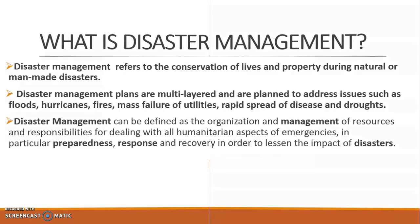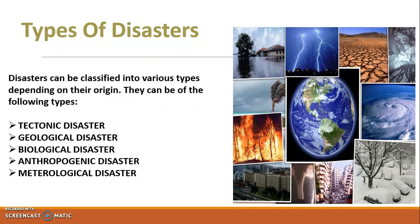Next we are going to see some of the types of disasters. Disasters are basically classified into types based on their origins. The first is tectonic, then geological, biological, anthropogenic, and meteorological. Let us study them one by one.